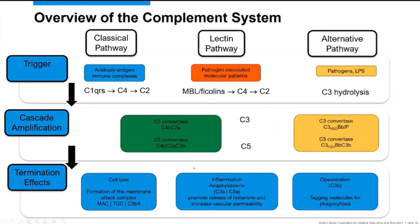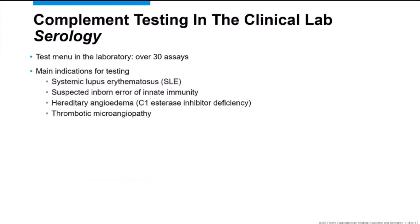The main effects of complement are threefold: cell lysis through formation of the membrane attack complex (MAC), composed of C5b, C6, C7, C8, and C9; inflammation through anaphylatoxins, with fragments of C3 and C5 being the most potent; and opsonization, where C3 fragments tag the surface of cells to facilitate phagocytosis. The main indications for complement testing include systemic lupus erythematosus, suspected primary immunodeficiency, hereditary angioedema, and thrombotic microangiopathies.